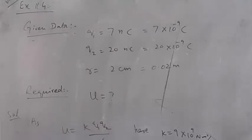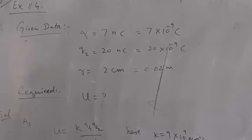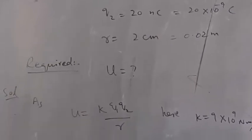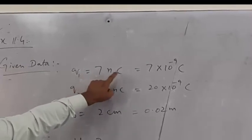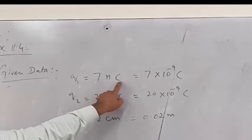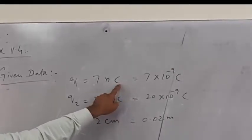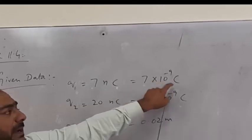From the potential energy formula, we need the required data. We have Q1 equals 7 nano coulomb. Using the nano prefix, that is 7 × 10^-9 coulomb.